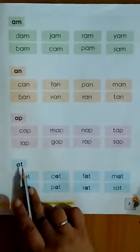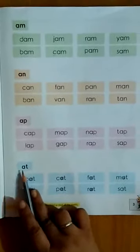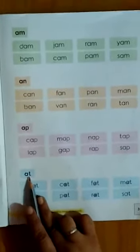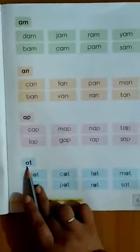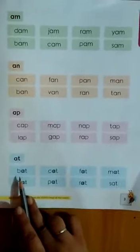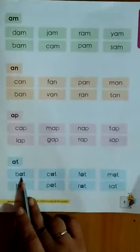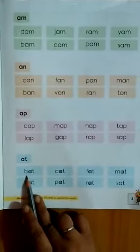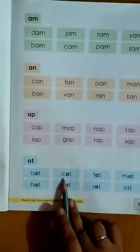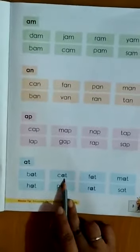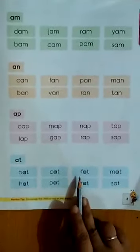A-T cluster words. A-T. B-at: bat. C-at: cat.